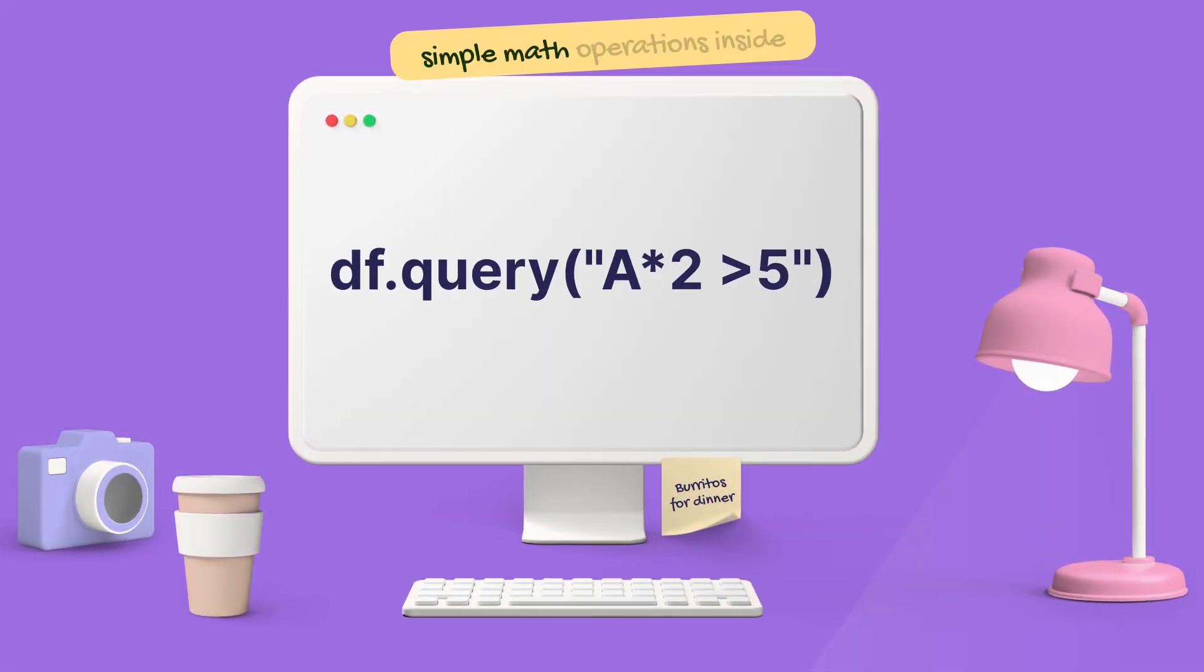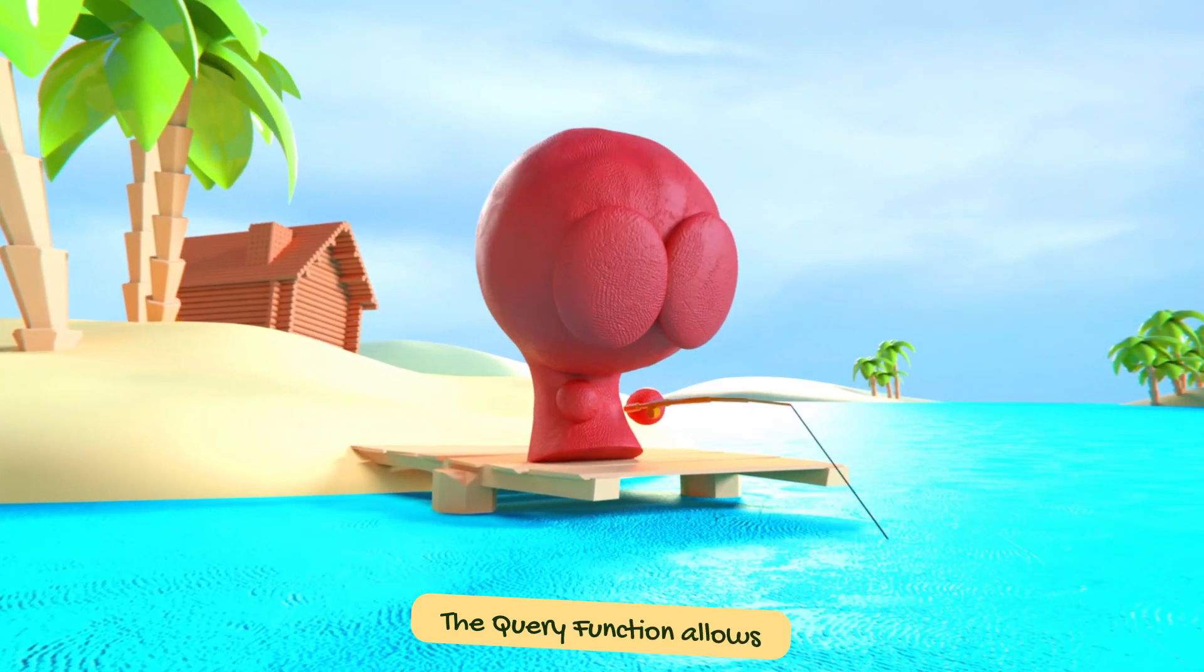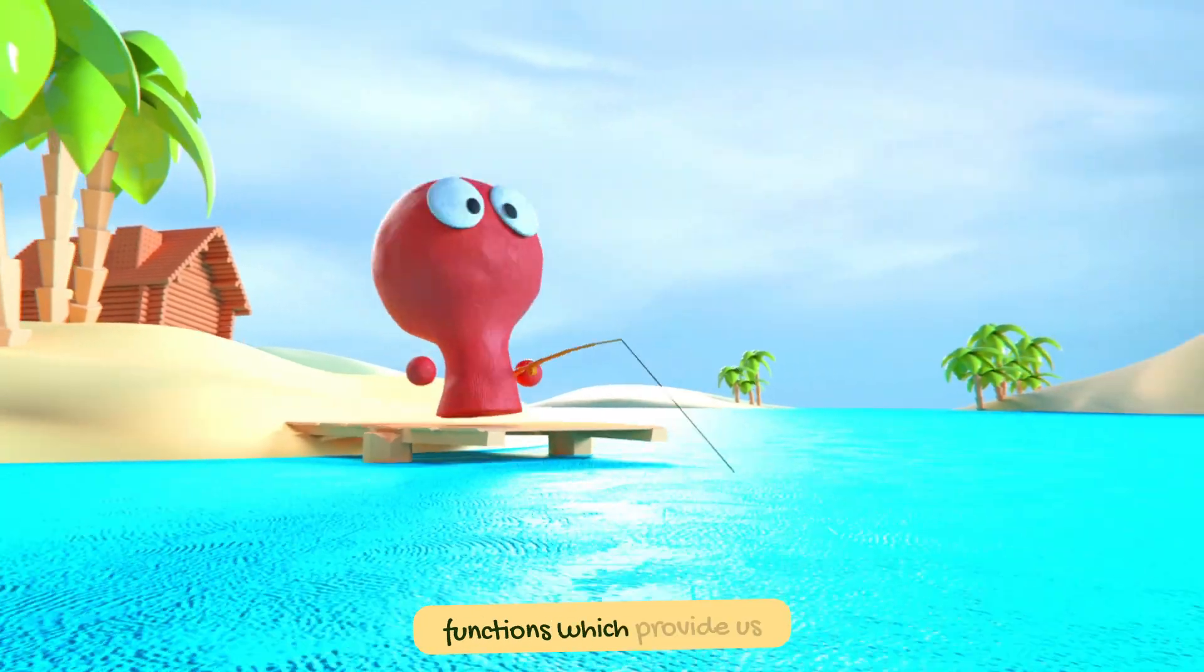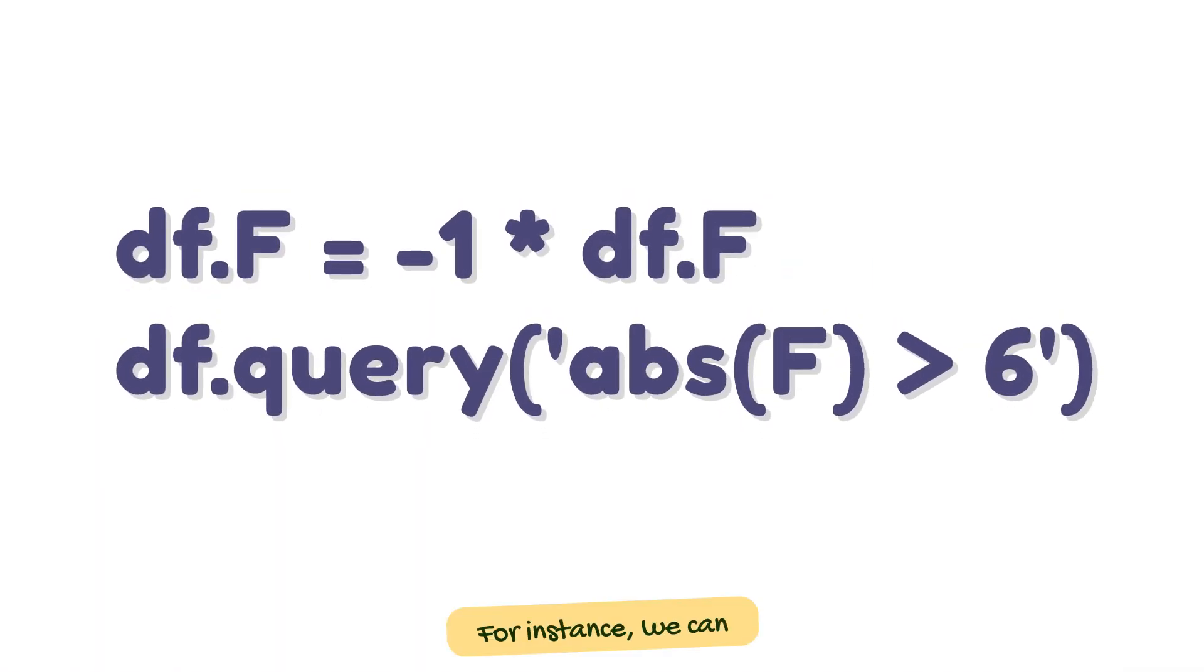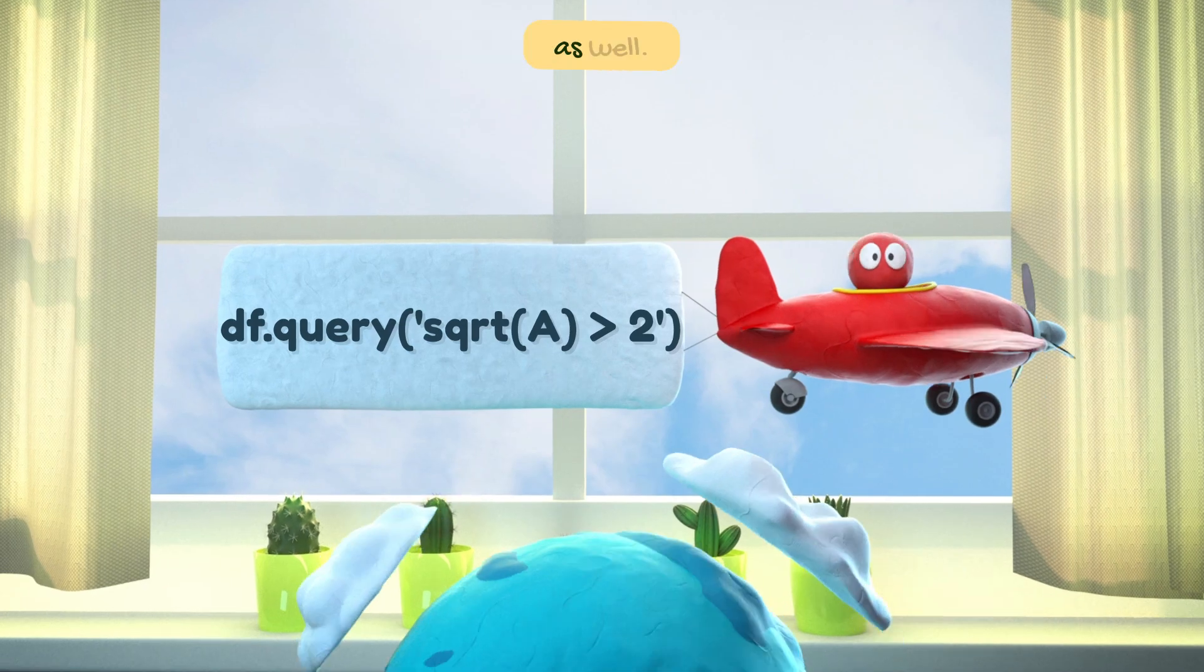We can also use simple math operations inside query function. The query function allows for using some built-in functions which provide us with more flexibility. For instance, we can use the abs function which returns the absolute value of a number. It is possible to use square root function as well.